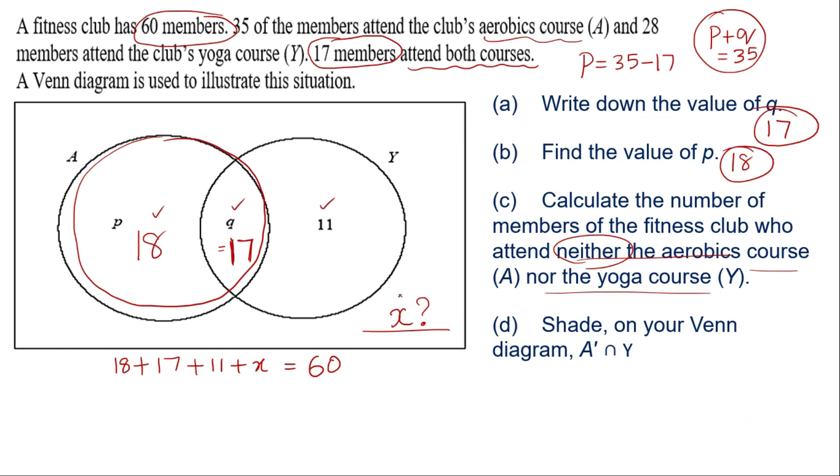And making an equation. I can write 18 plus 17 plus 11 plus X gives me a total of 60 members. I have added all the four terms from the figure making it to a total of 60. So from this when you solve this equation I can get the answer 46 plus X giving you 60 from which X is going to be 60 minus 46 giving you 14.